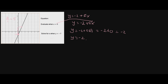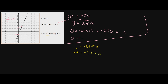Now solve for x when y equals negative seven. Our equation is y equals negative two plus five x. Before solving algebraically, let's look at the graph. Negative seven on the y-axis is right here, and following that across, it touches the graph at x equals negative one. So graphically, when y is negative seven, x is negative one. Let's verify with algebra.